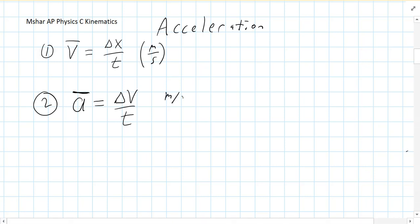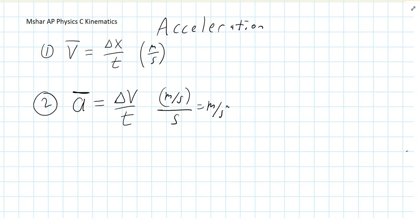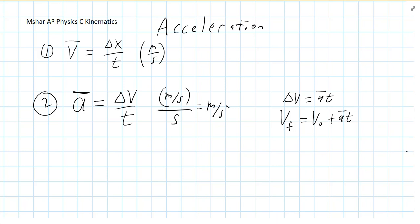The units for acceleration: velocity is usually in meters per second, and we're dividing that by time, so this is meters per second per second. Some people write this as meters per second squared, but I usually write meters per second per second — what that's telling you is how quickly the object's velocity is changing each second. Other versions of this equation include solving for delta V, which gives A times T. And since delta V is V final minus V initial, solving for V final gives you V naught plus A times T. These are all the same equation, just slightly different forms.